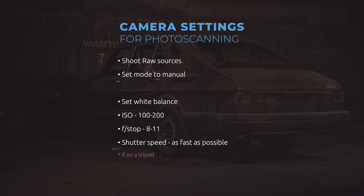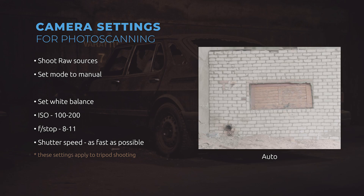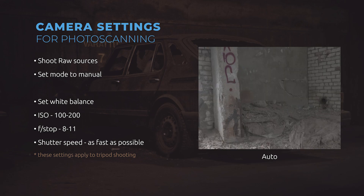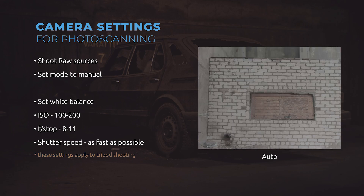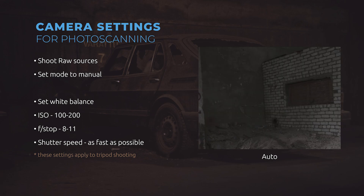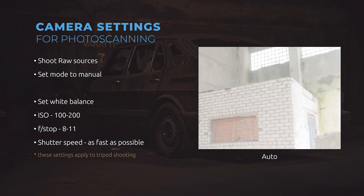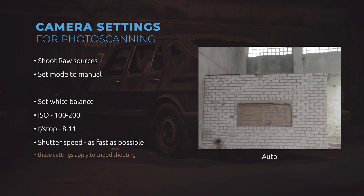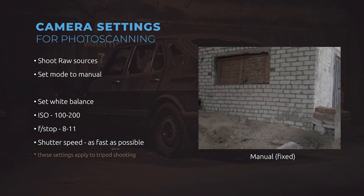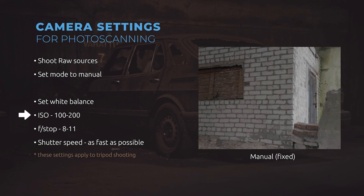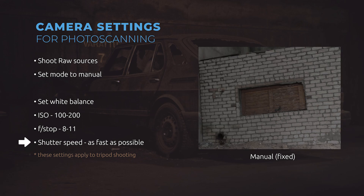The next thing we should take care of right away is setting the mode to manual. Every camera has the auto mode, but it's no good to let the camera decide what the exposure should look like. It will lead to inconsistent flickering output — not only brightness will flicker, but also the depth of field due to changes in f-stop. It is much safer to set the mode to manual, which will fix the ISO, f-stop and shutter speed settings.